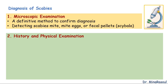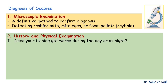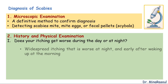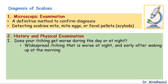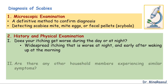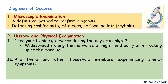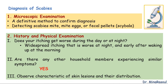To collect the necessary information, ask your patients the following questions. Question 1: Does your itching get worse during the day or at night? Scabies itching tends to be worse at night when the skin is warmer, as the heat stimulates movement and activity of the mite. Question 2: Are there any other household members experiencing similar symptoms? Scabies is highly contagious and spreads primarily through direct, prolonged skin-to-skin contact, making family members and sexual partners particularly vulnerable. A positive answer can support the diagnosis. Finally, observe the characteristics of skin lesions and their distribution, as scabies presents with distinctive cutaneous lesions and a typical pattern of spread.